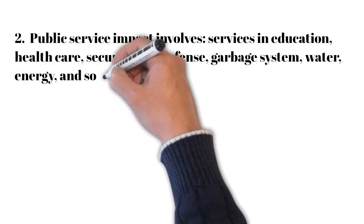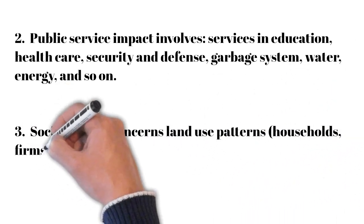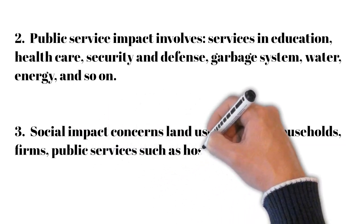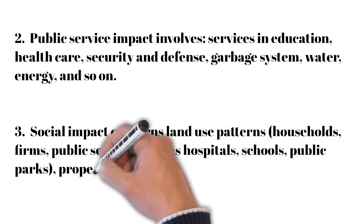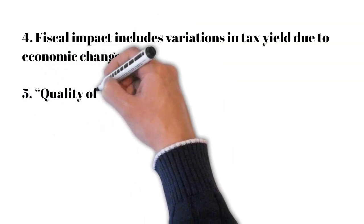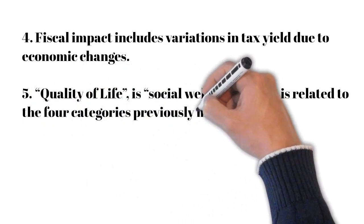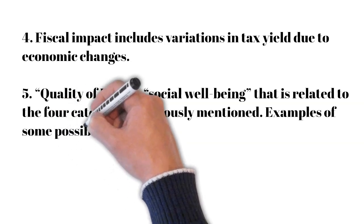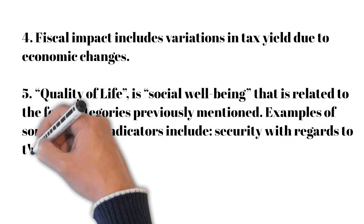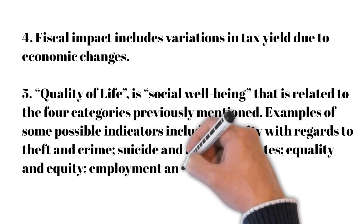Social impact concerns land use patterns, household themes, and public services such as hospitals, schools, public parks, property, and transportation. Fiscal impacts include variation in tax yield due to economic changes. Quality of life is a social well-being related to the four categories previously mentioned; possible indicators include security with regard to crime, suicide and alcoholism rates, equality and equity, employment, and family stability.